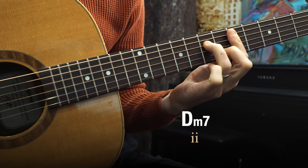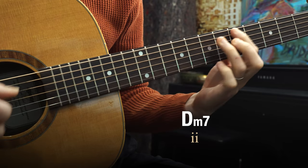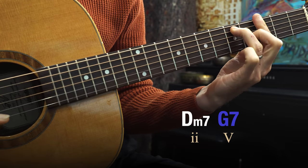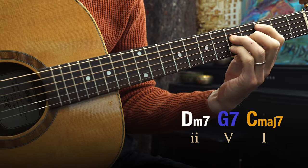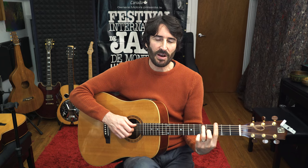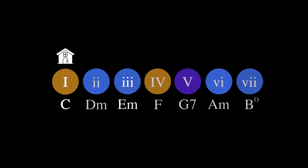Let's look at how they function in a basic chord progression. A two-five-one in the key of C would be D minor seven to G dominant seven to C major seven. The function of that dominant five chord is to pull us back to the home chord — this is so often how we see these two types of chords working in combination.